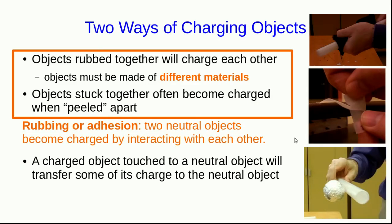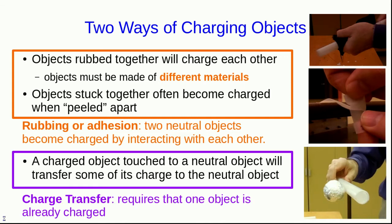So what we've just seen is a totally different way of charging an object from the ways we've seen before. If we have an already charged object and we touch it to a neutral object, then it transfers some of its charge to the neutral object.